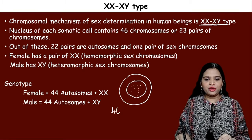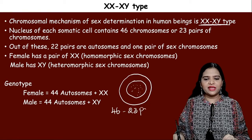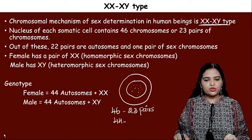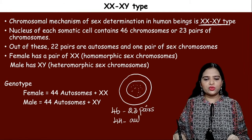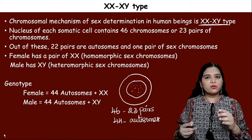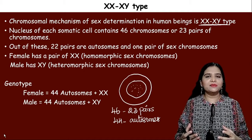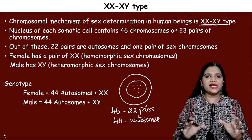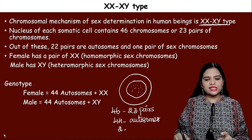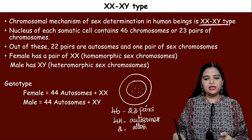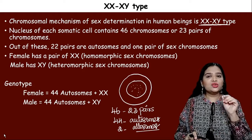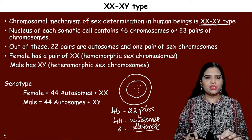Human beings have 46 chromosomes which exist in 23 pairs. Out of these 46 chromosomes, 44 are called autosomes, responsible for bodily characters such as eyes, heart, lungs, and liver. The remaining two chromosomes are called allosomes or sex chromosomes, and they determine the sex of an individual.